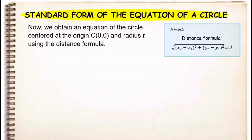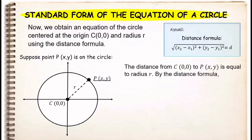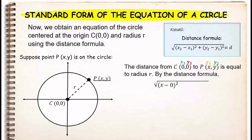Suppose the center (0, 0) is the first point where x₁ = 0 and y₁ = 0, and let point (x, y) be the second point where x is our x₂ and y is our y₂. By the distance formula we have the square root of (x₂ which is x, minus x₁ which is 0) squared plus (y₂ which is y, minus y₁ which is 0) squared, equals r.